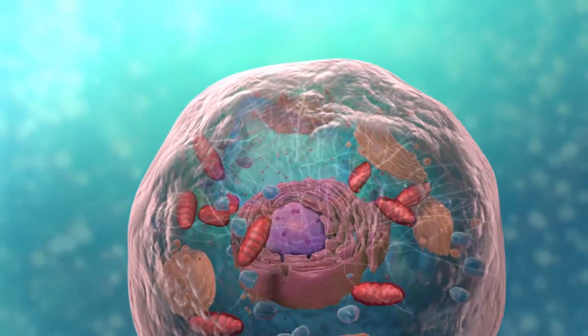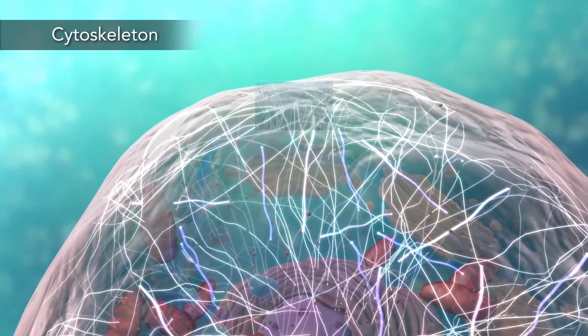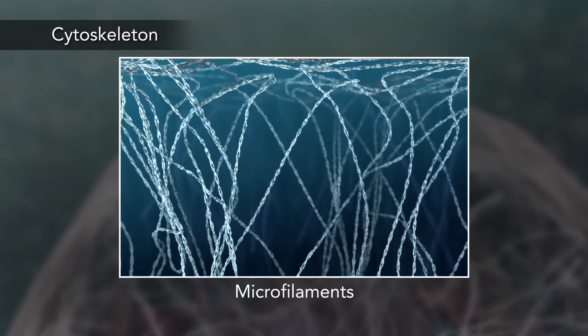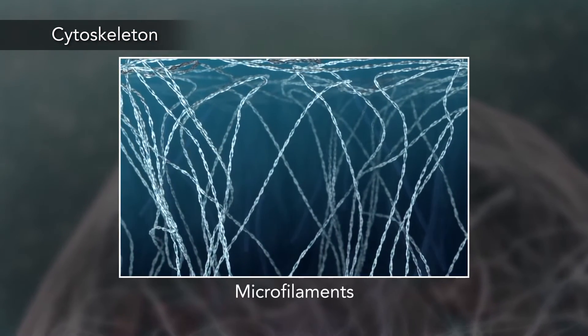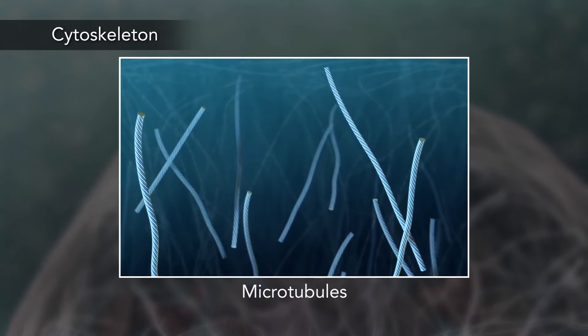Meanwhile, the cell maintains its shape through a cytoskeleton. The cytoskeleton includes the thread-like microfilaments, which are made of protein, and microtubules, which are thin hollow tubes.